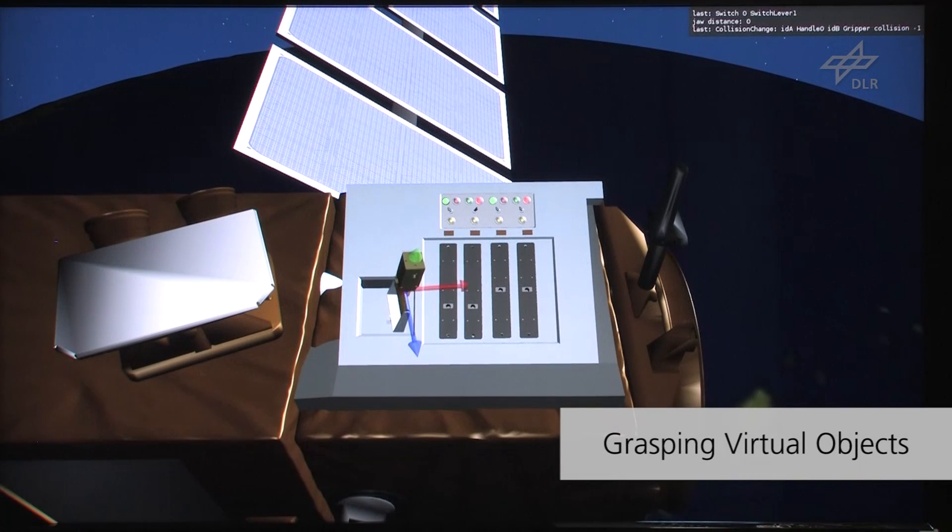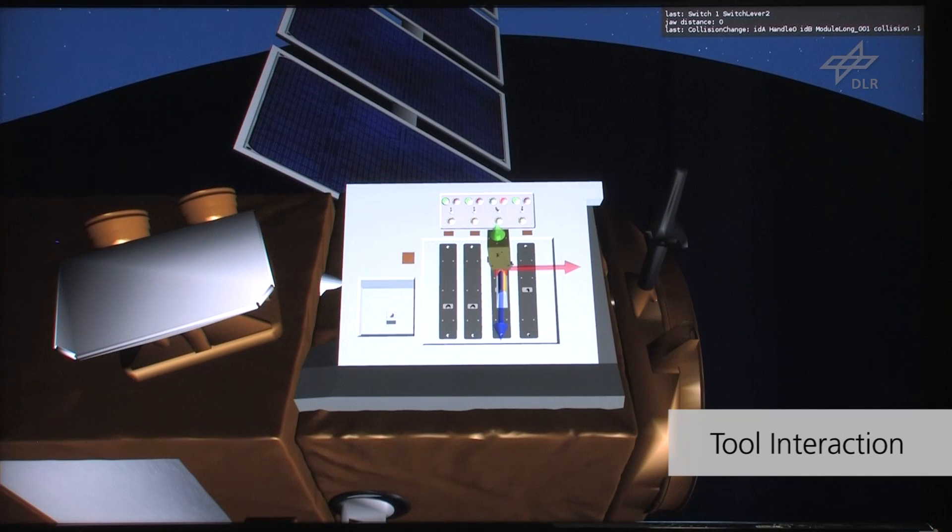Turn off the switch related to the broken module, grasp the handle with a gripper, and remove the module from its cavity. This action shows the interaction possibilities between tools.